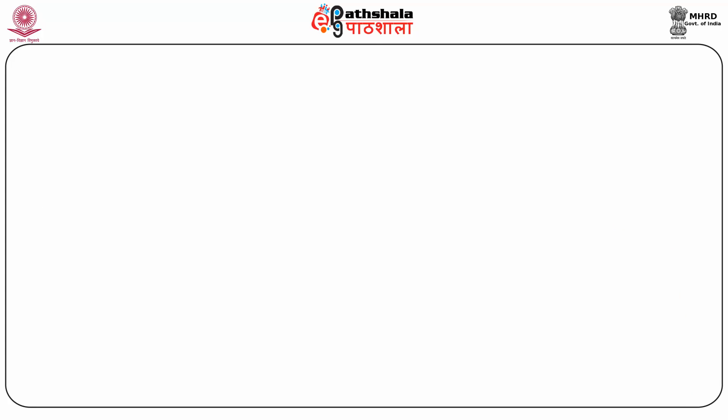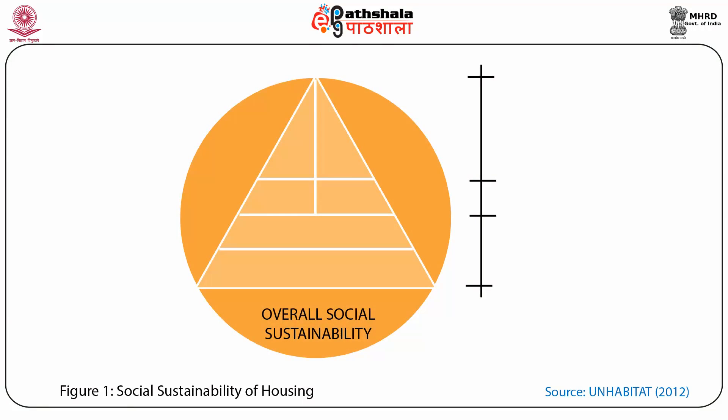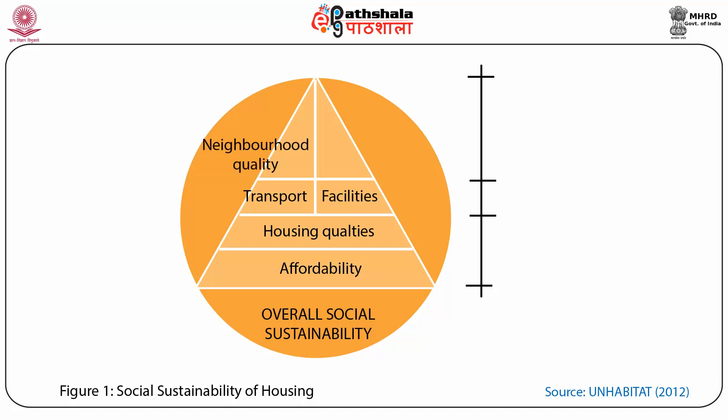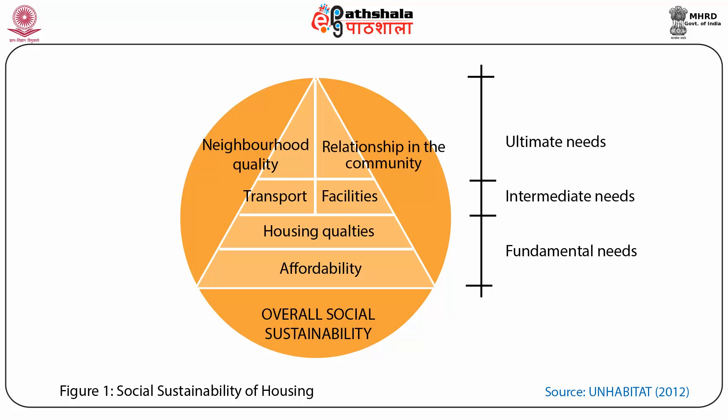The social sustainability of housing and its components can be understood with the help of Figure 1. The figure shows that the cost of housing as indicated by affordability as well as the housing quality are the fundamental needs of social sustainability. Next comes the accessibility in terms of transport and other facilities, and the neighborhood quality and relationships in the community are the ultimate needs. All these features are actually mutually inclusive — accessibility, affordability, quality of houses and neighborhoods are interrelated.